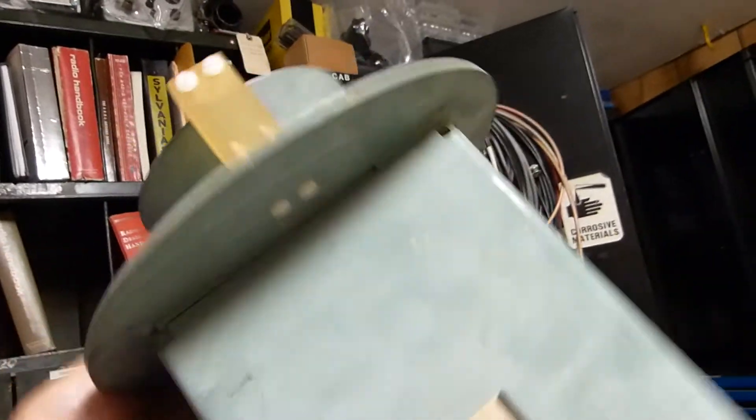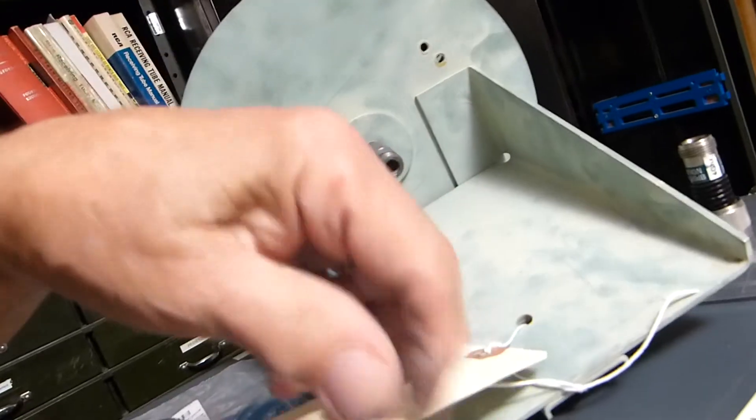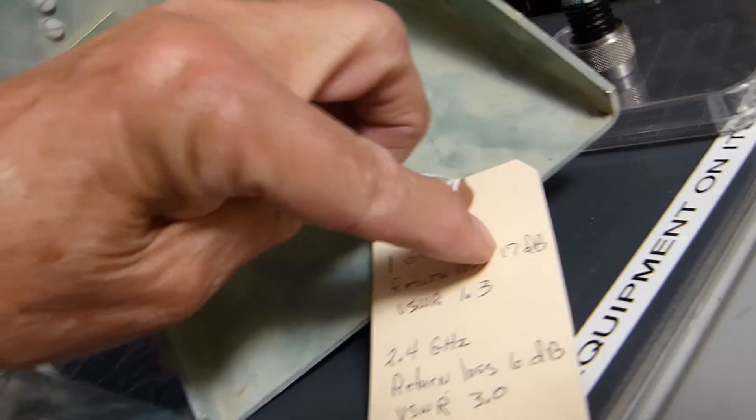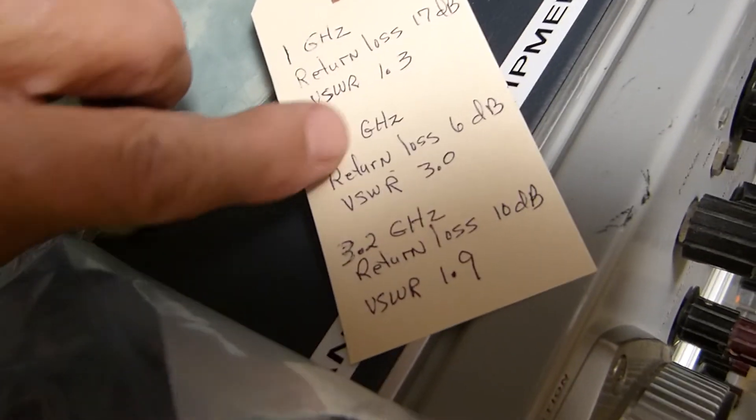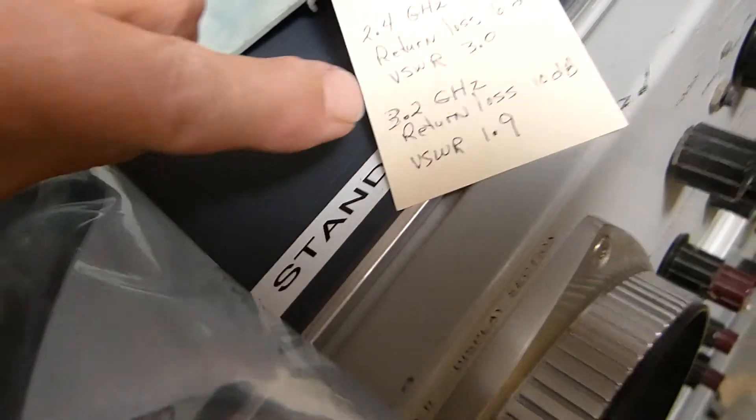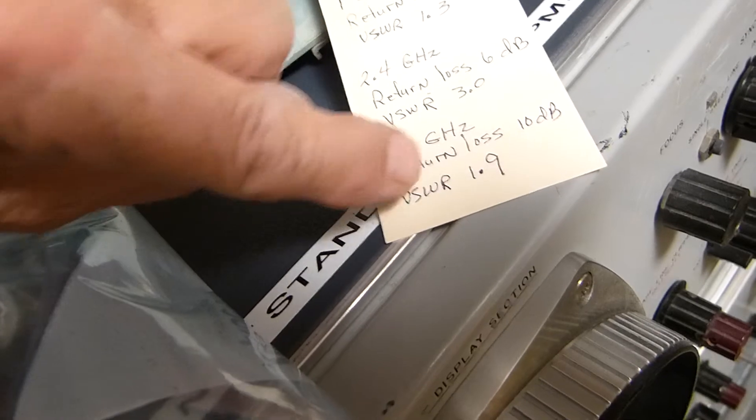And then I measured—I'm going to show you how to measure SWR on these things too, hopefully in a way that you don't have to have a whole lot of money. At one gigahertz I get a return loss of 17 dB—this gives me an SWR of 1.3. At 2.4 gigahertz you get a return loss of 6 dB, which is SWR of 3. And at 3.2 gigahertz, which is as high as I can go, my return loss is 10 dB, which is 1.9.